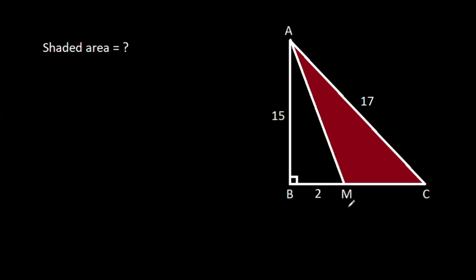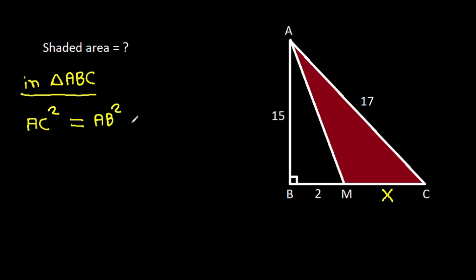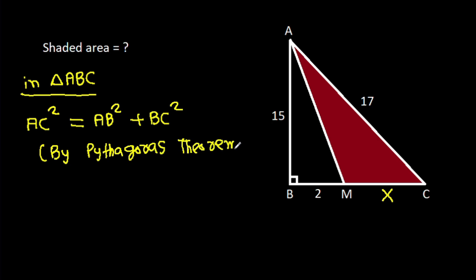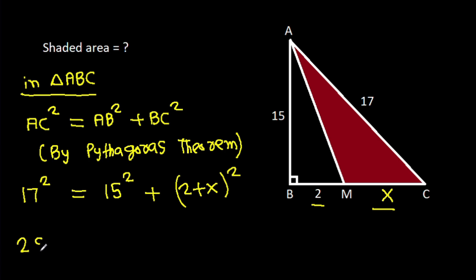Suppose CM is X. Then in triangle ABC, by Pythagoras theorem: AC squared equals AB squared plus BC squared. AC is 17, so 17 squared equals 15 squared plus (2 + X) squared.